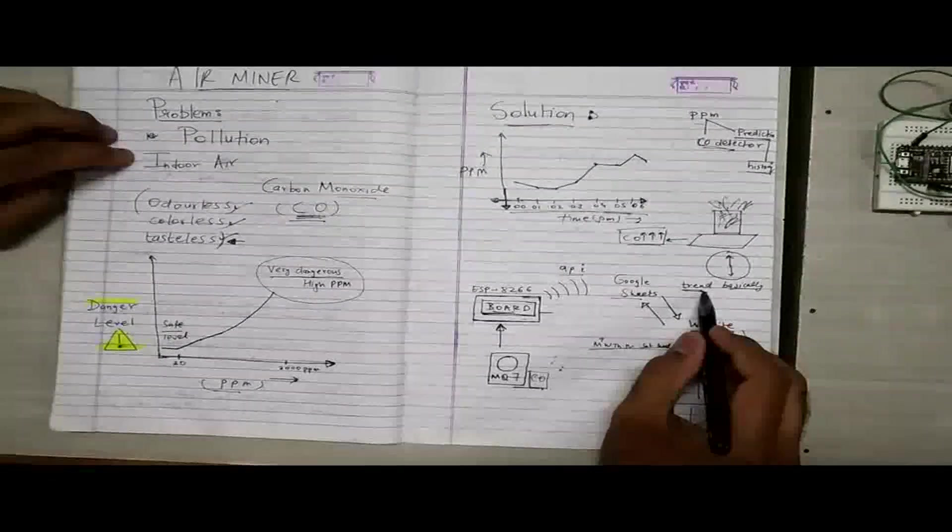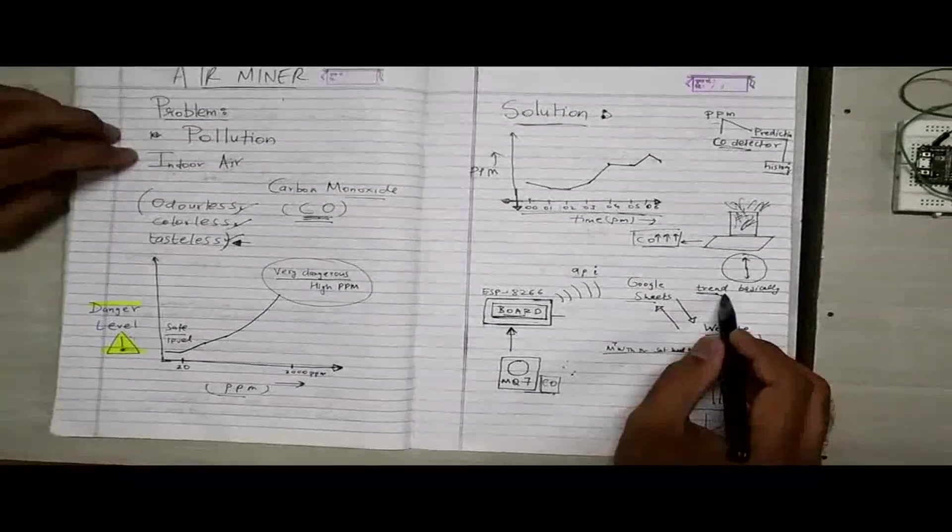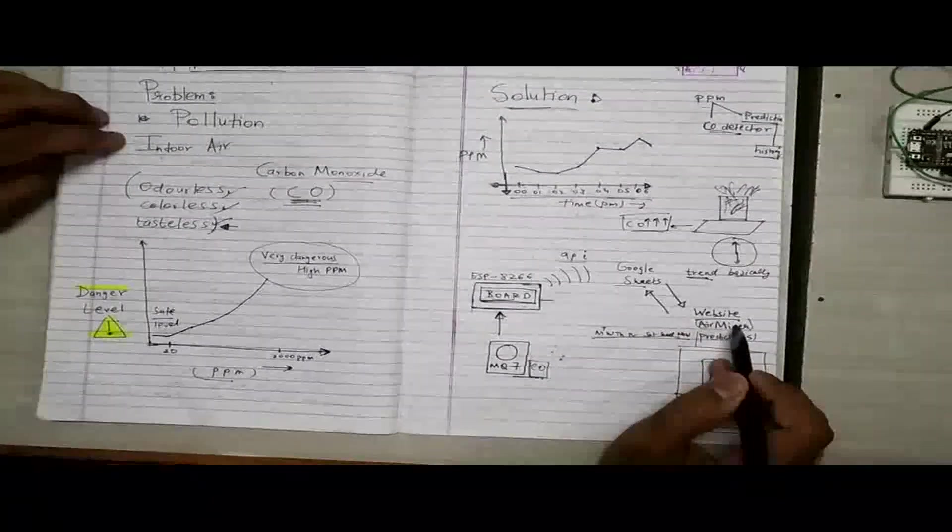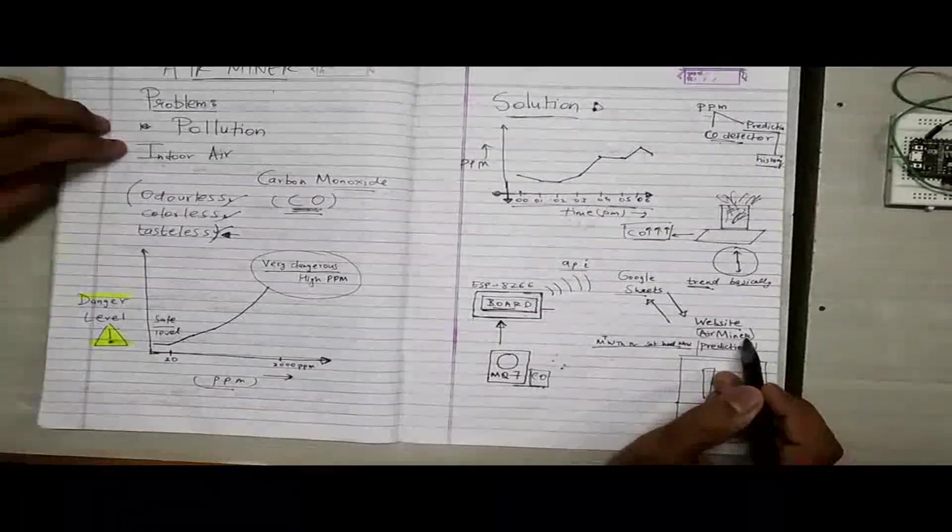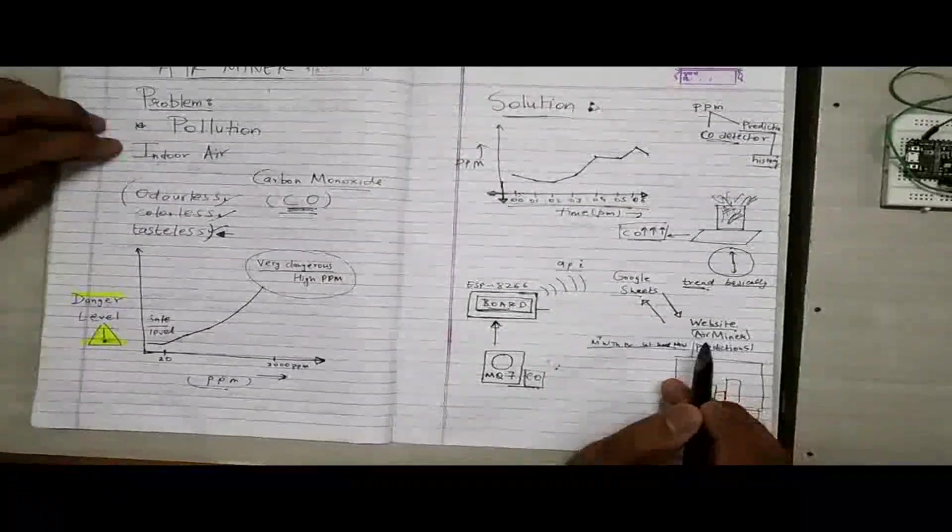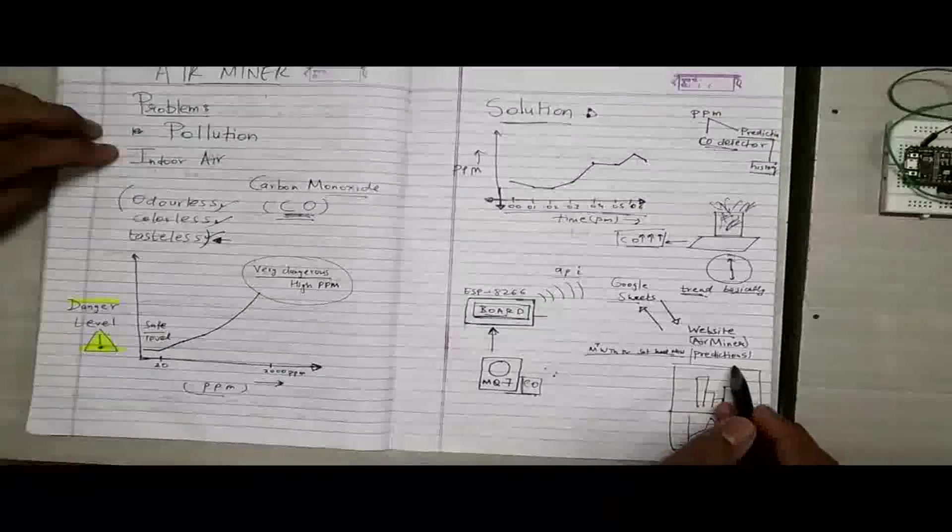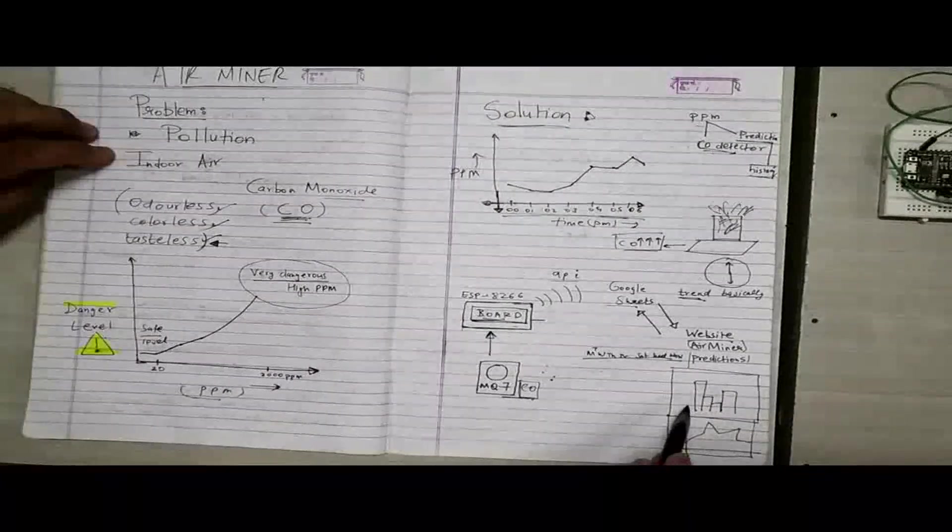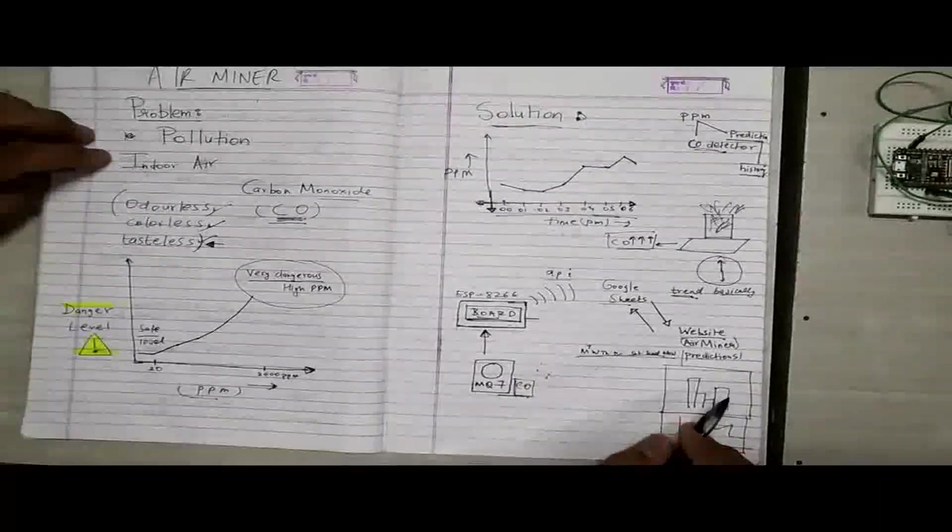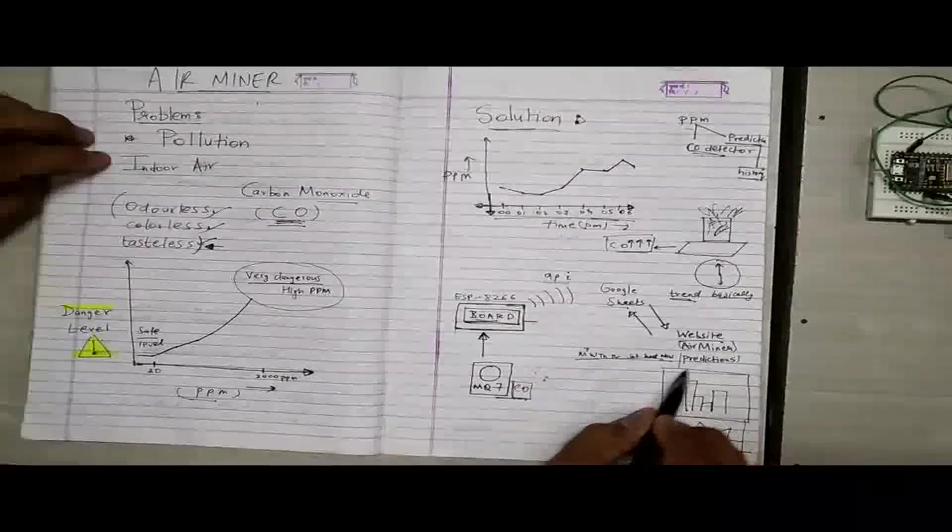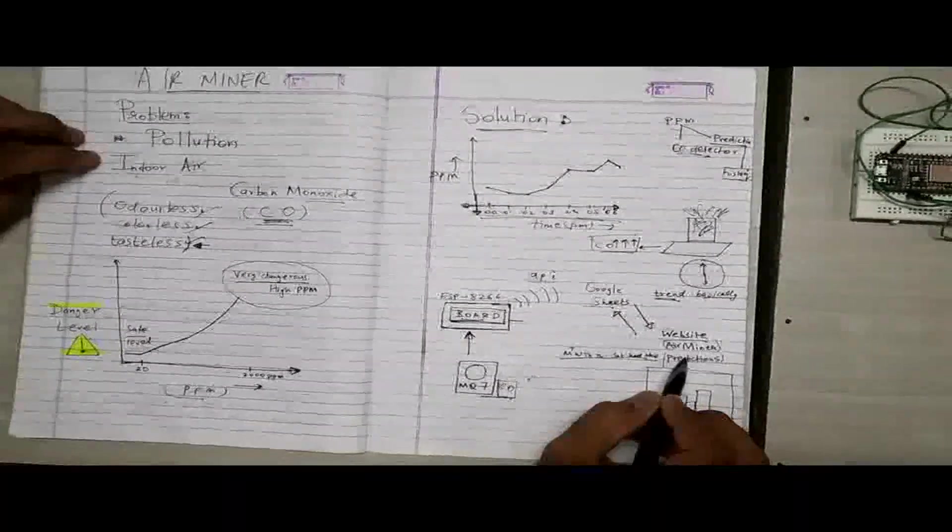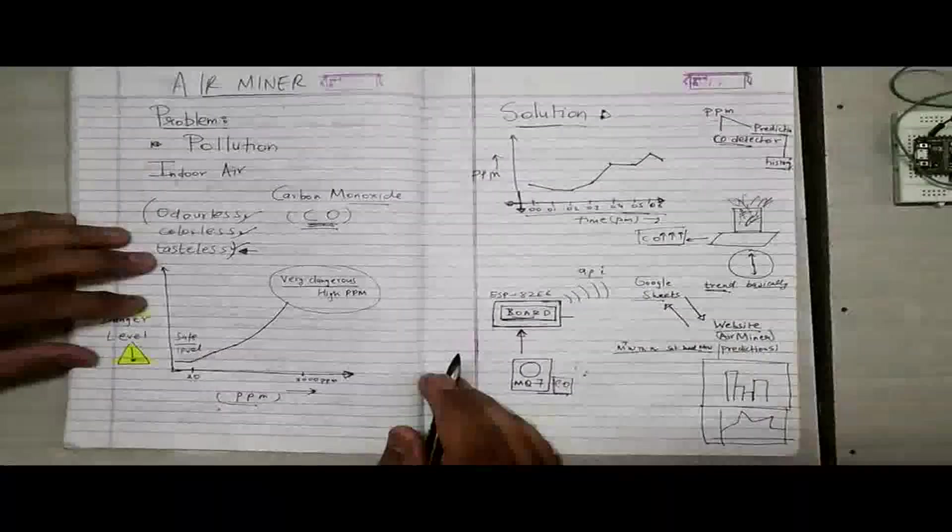As I just explained, a trend will give you approximate predictions based on past history values. That trend is now sent to the website, Air Miner's website that we had built. We had tested it on localhost. Now, this prediction is displayed on the front end of the website like so, as a bar graph or as any other form of visual representation. That solves the problem. Now, user can know beforehand that maybe tomorrow at 6 am or 6 pm CO PPM might dip or might rise.